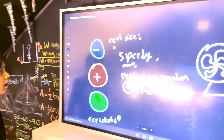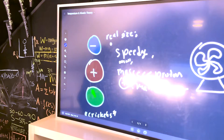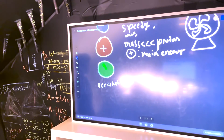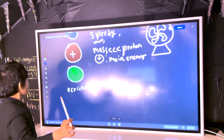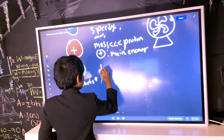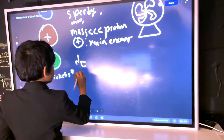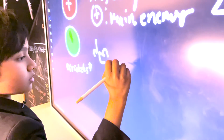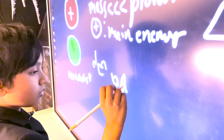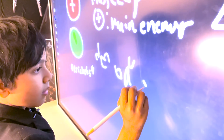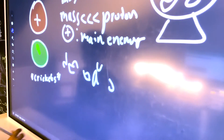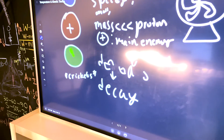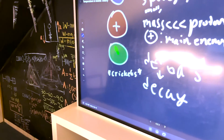Then we have the proton, which is basically the same as the neutron but has a positive charge, and it's there to cancel out the electron. The neutron may seem useless because it has no charge, but it's there to keep the radioactive decay of your nucleus stable — it makes decay possible.